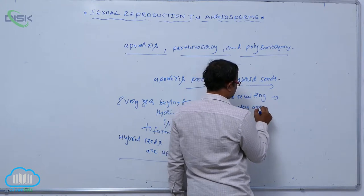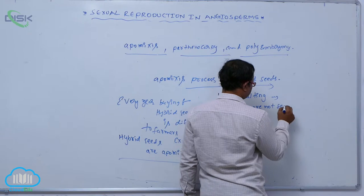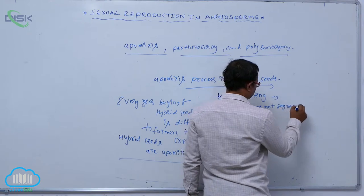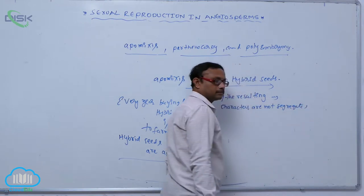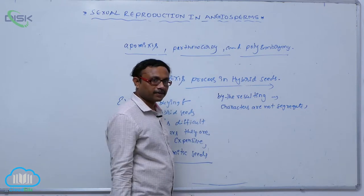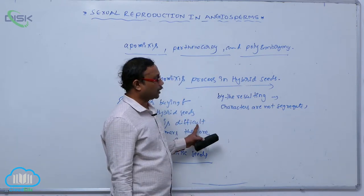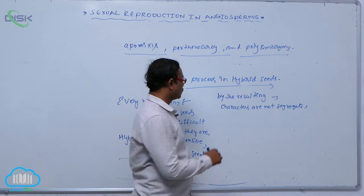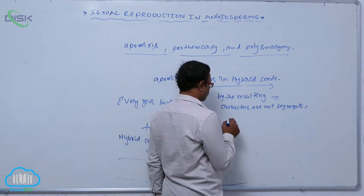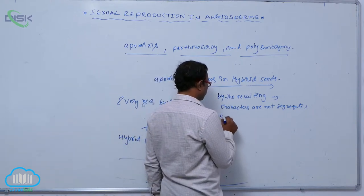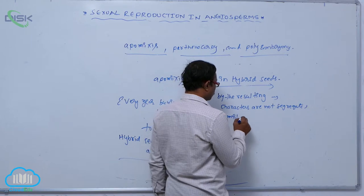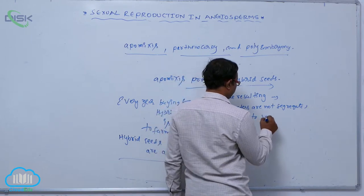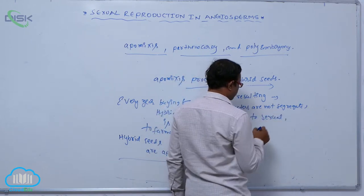Characters are not segregated, so they produce similar types of hybrid plants by apomixis. Apomixis is not sexual reproduction; it is similar to sexual reproduction without sexual reproduction.